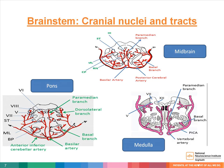Every tract to and from the brain passes through the brainstem. An additional feature of the brainstem is that it consists of ten pairs of cranial nuclei, and importantly, the reticular formation, which regulates sleep and wakefulness and cardiorespiratory control.